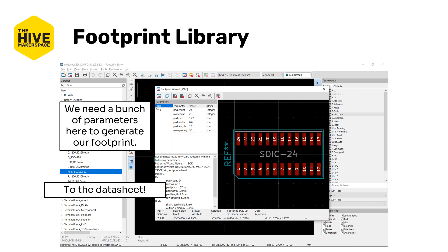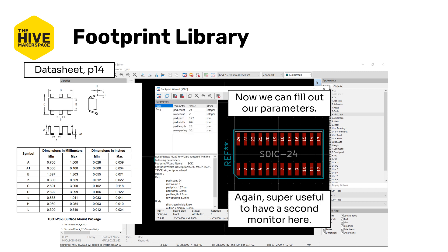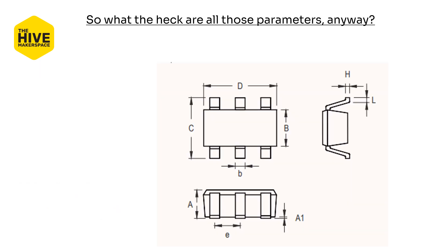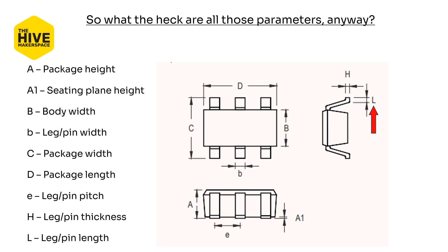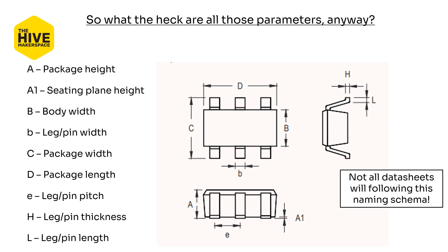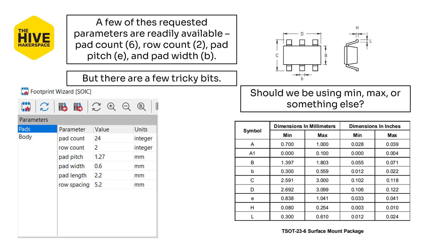We're going to need a bunch of parameters to generate our footprint, so we have to go to the datasheet first. You might notice some physical similarities — legs and a rectangular outline — which tells us we're probably using the right wizard. What are all of these parameters anyway? We've got package height, seating plane height, body width, leg pin width, package width, package length, pin pitch, pin thickness, and pin length. Not all datasheets will follow this naming schema. In the footprint wizard it asks for pad count, which is six, row count — two rows — pad pitch which is the E value, and pad width which is the little b.